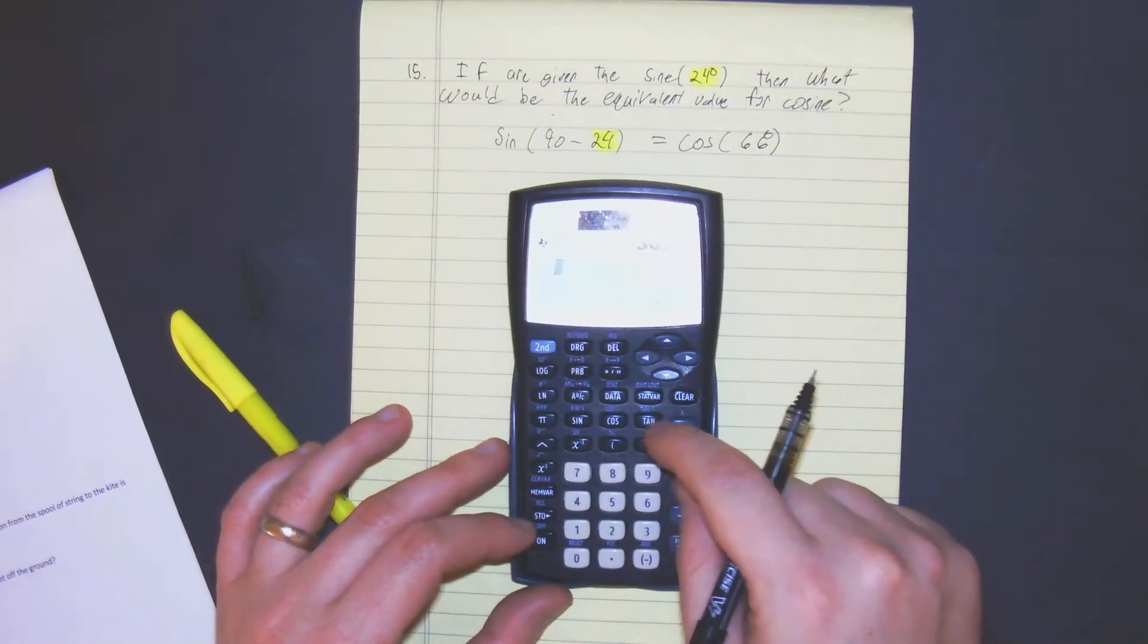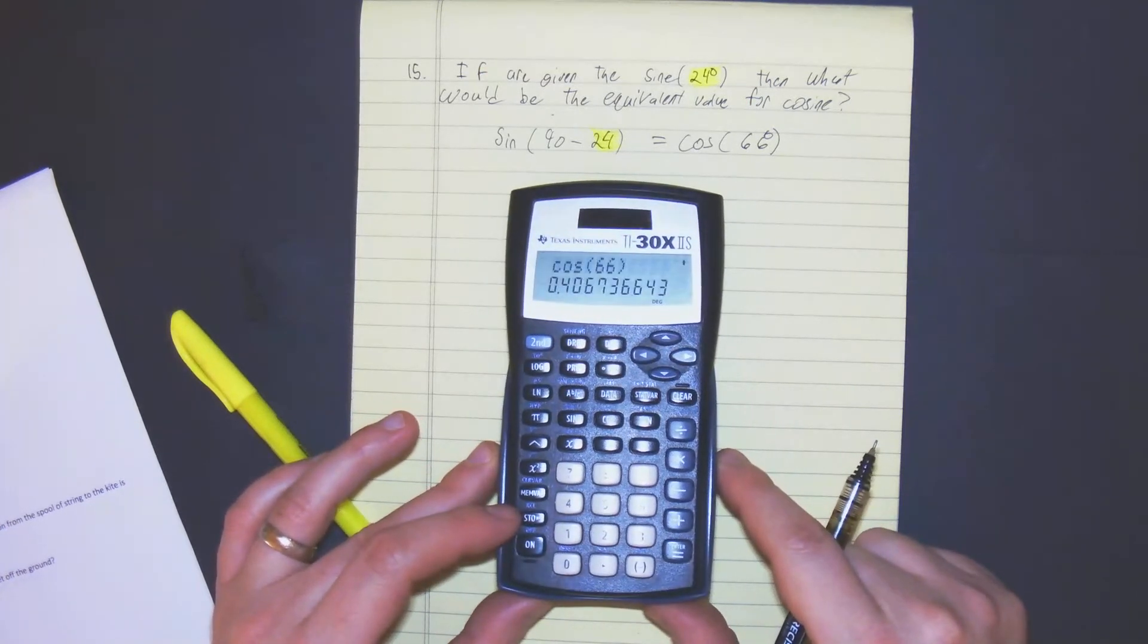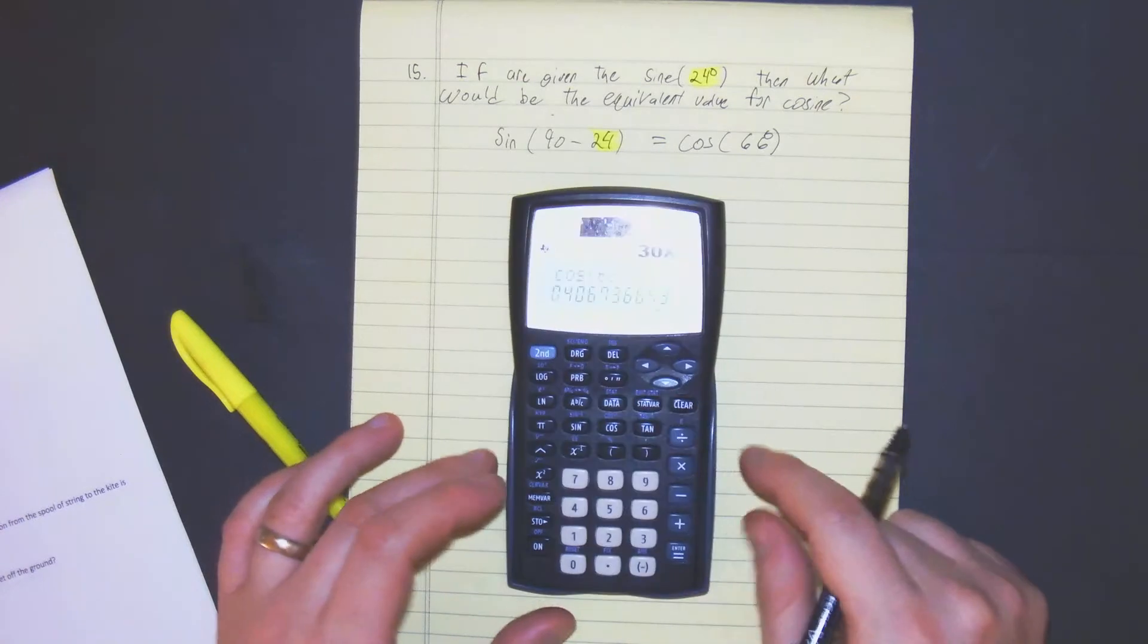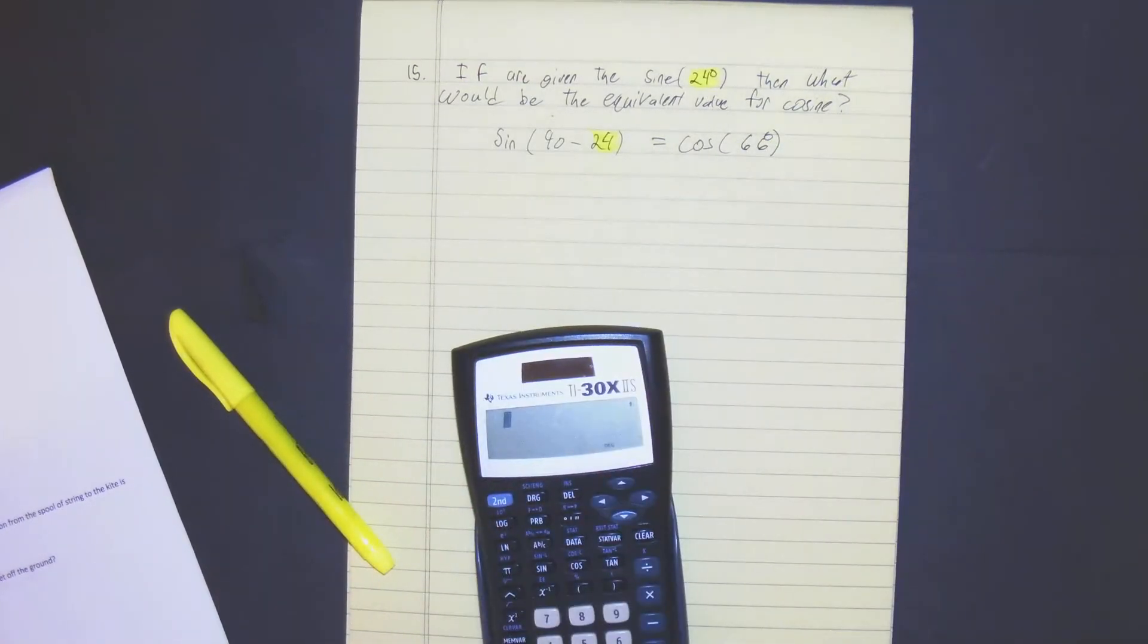So let's try cosine. So the cosine is 66, 0.4067. As you can see, cosine of 66 degrees is the same as the sine of 24 degrees.